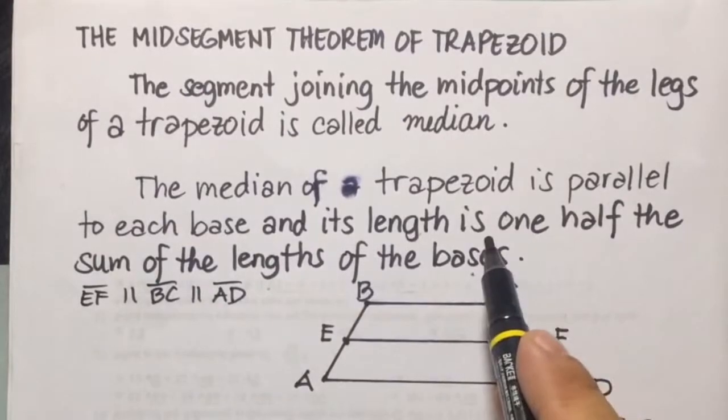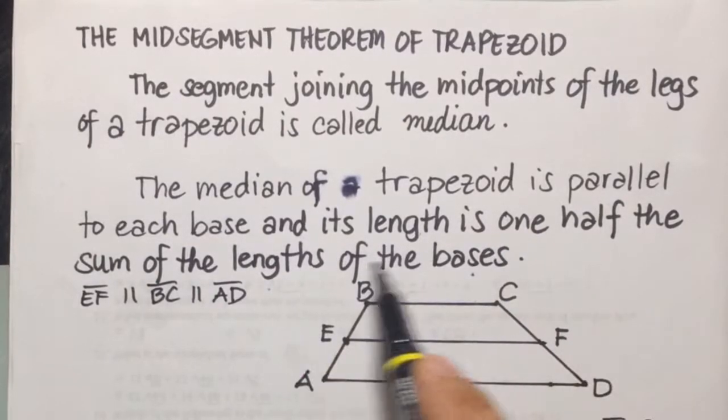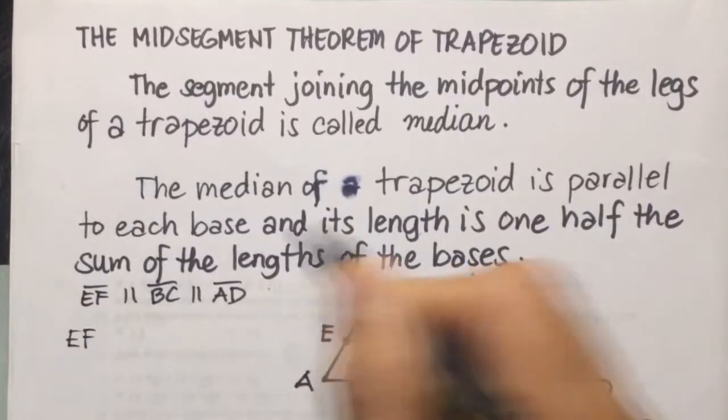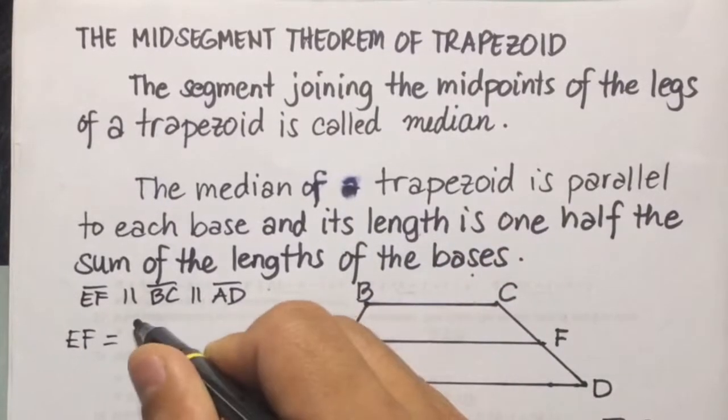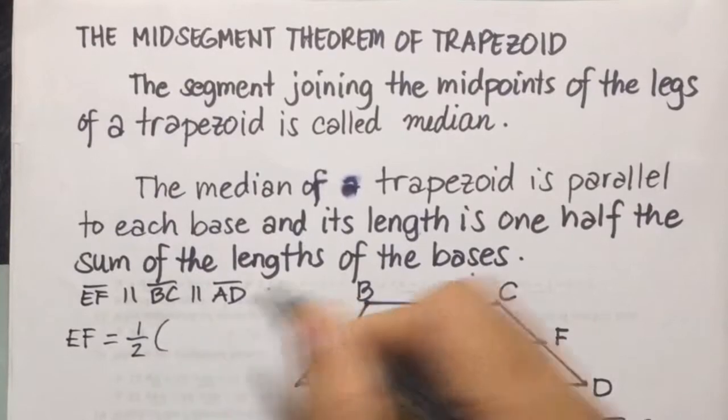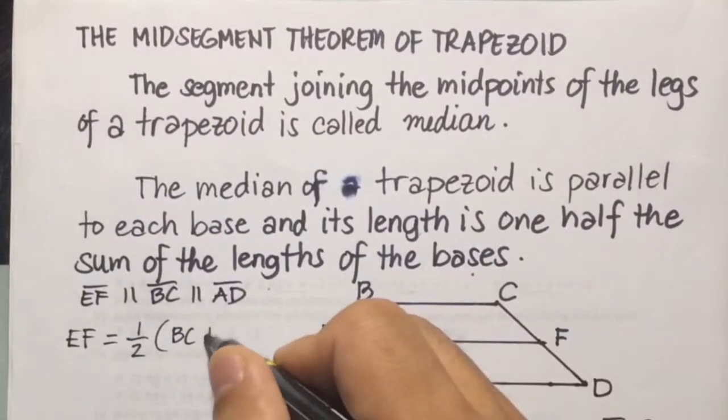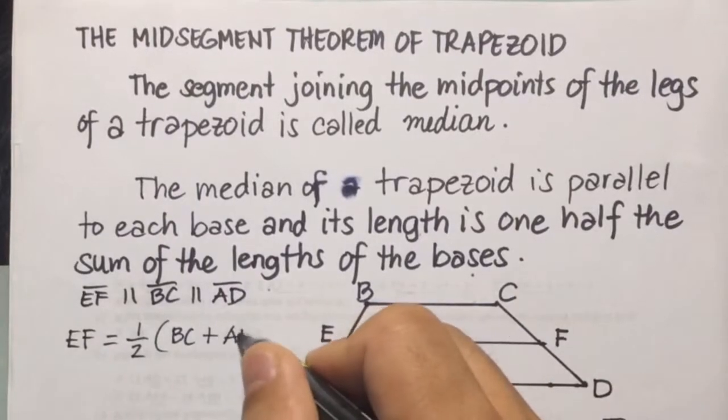Then in here, it is also one half the sum of the lengths of the bases. So EF is equal to one half the sum of the two bases BC plus AD.